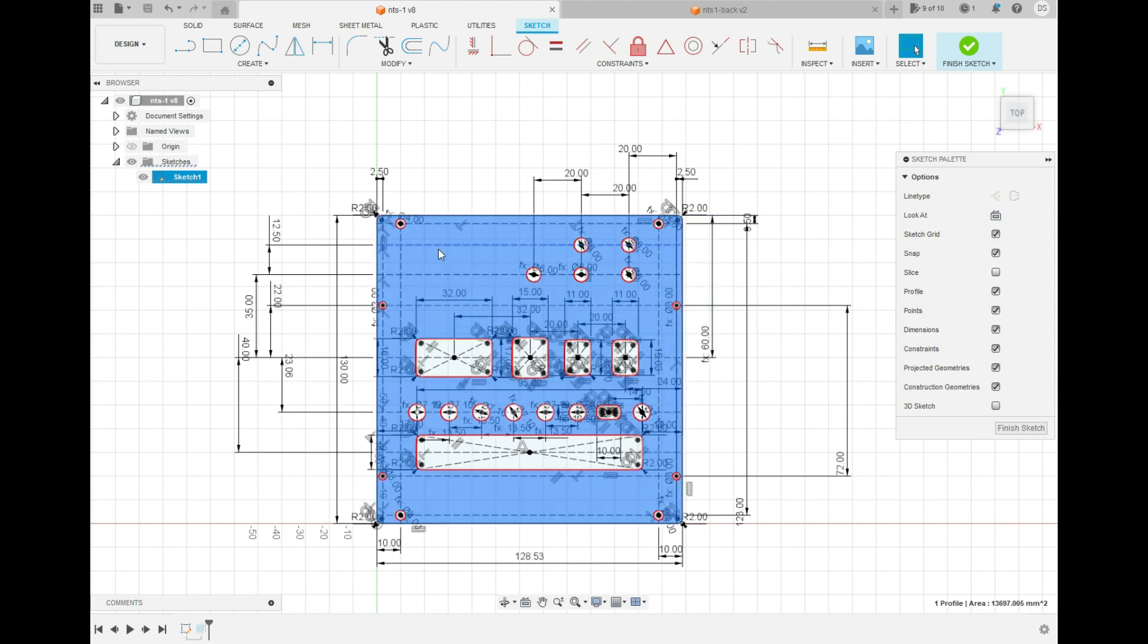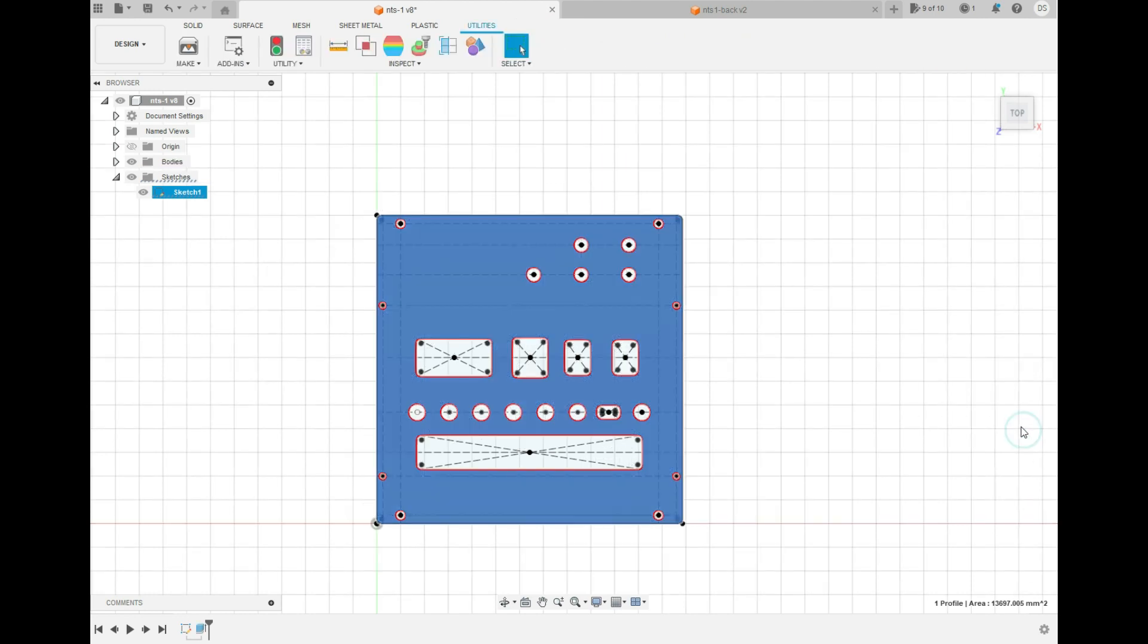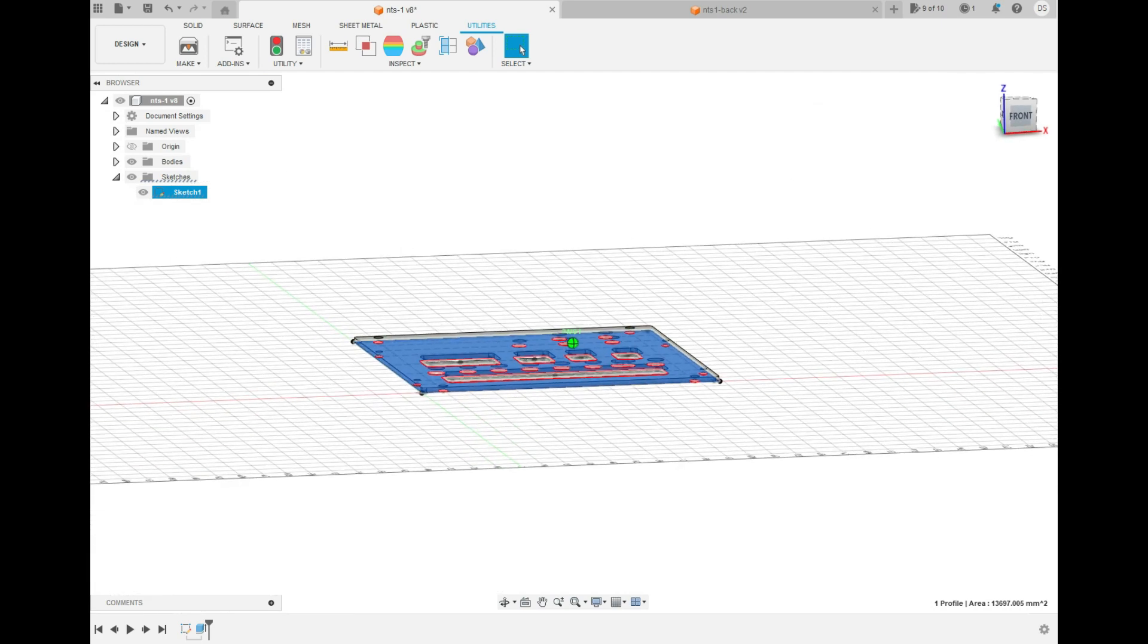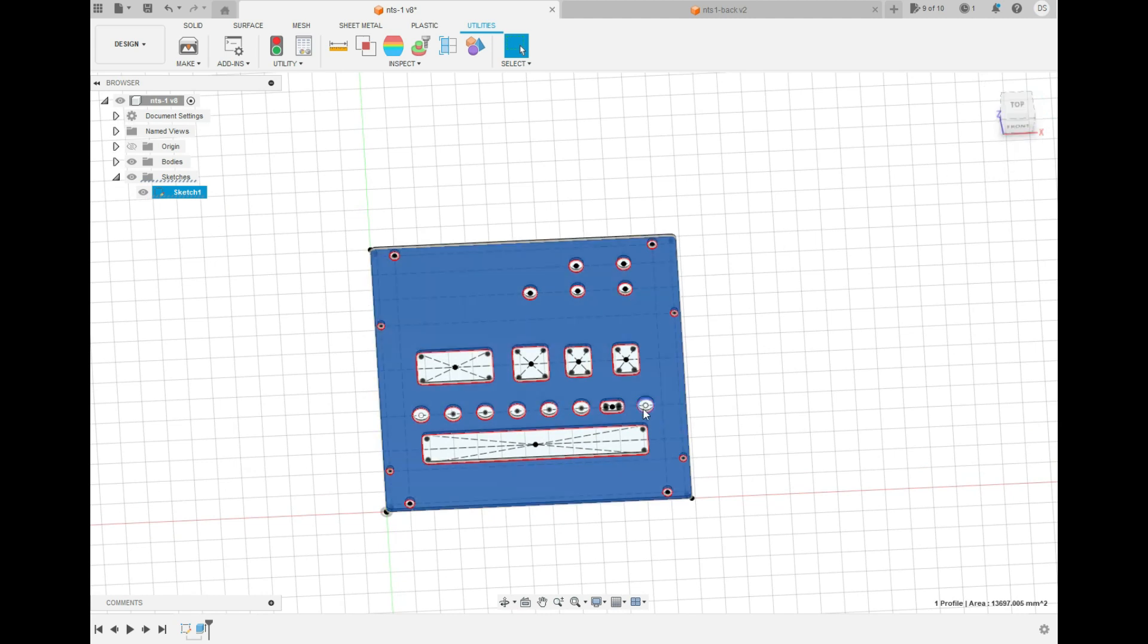The nice thing is by doing it in Fusion 360 and printing it out on a 3D printer, I can check that all the holes and everything are in the right location. It also allows me to create a DXF file out of Fusion 360 that I can send away to Send Cut Send and get an aluminum version of this front panel put together, which I'll use for the final mounting of the NTS1 into the Eurorack.